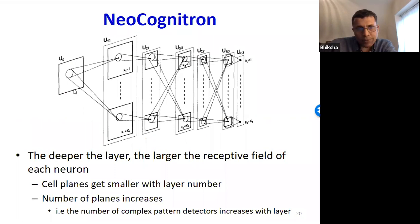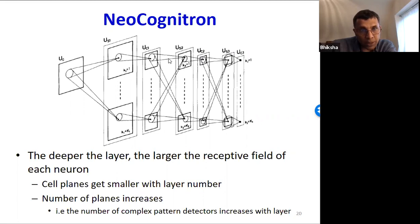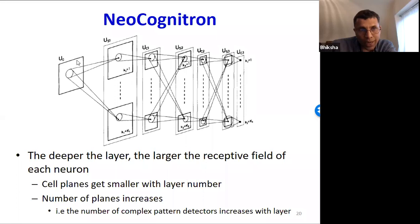Because each cell looks at an elliptical region, which in turn looks at an elliptical region further back, the total input any C cell responds to traces back to a fairly large region of the input. This means the C cells end up responding to large-scale patterns. As you go through the network, the size and complexity of the pattern each cell responds to becomes greater and greater.